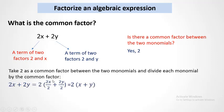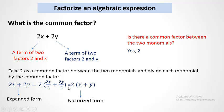Take 2 outside, open parenthesis, then divide each term by the common factor 2. So 2x divided by 2 is x, plus 2y divided by 2 is y. The factorized form is 2 multiplied by x plus y, which gives back the expanded form.